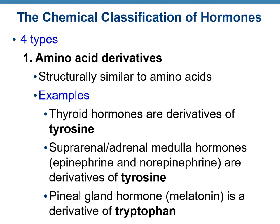Chemically, hormones can be classified into four types. The first type is amino acid derivatives — amino acids are building blocks of proteins. Examples include all thyroid hormones, which are derivatives of the amino acid tyrosine; adrenal medulla hormones such as epinephrine (adrenaline) and norepinephrine (noradrenaline), also derivatives of tyrosine; and the pineal gland hormone melatonin, derived from the amino acid tryptophan.